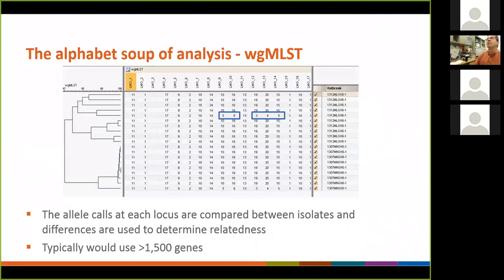This gives you an example of how that looks from a BioNumerics screenshot. You have a tree, because you can use whole genome MLST to build trees. You can look at your loci — they're called LMO 1 through 17 for Listeria monocytogenes. You can see LMO 7 in the middle, where they're all number 10 — all the same — but then you can see one isolate is different. We only see 17 loci of 2,000-plus. So while some isolates look exactly the same here, they are going to be different in other loci, which is why the tree shows them as different. But here you're back to staring at trees in order to make sense out of these loci.